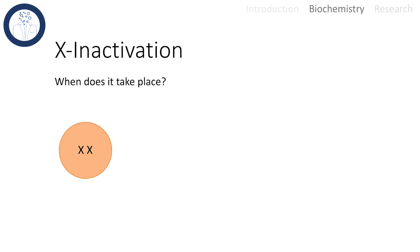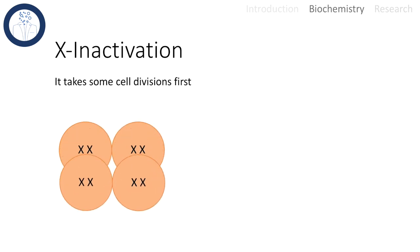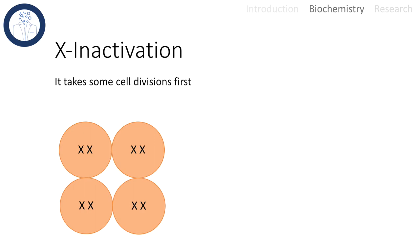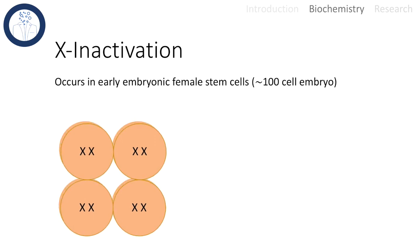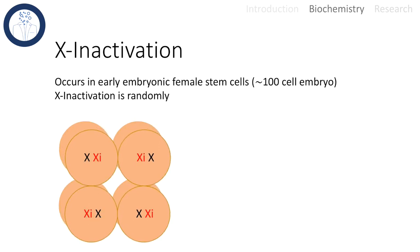But when does it take place? At first we have the female zygote, and it takes several cell divisions until one of the two X chromosomes randomly gets inactivated. This occurs in an early embryonic stem cell stage.